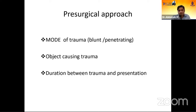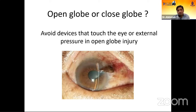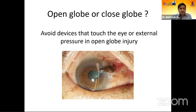The first thing to determine is whether the globe is open or closed. If you are suspecting an open globe injury — either anterior or posterior — avoid touching the eye, avoid applanation tonometry, syringing, or external pressure on the eye. Also avoid ultrasound B-scan or UBM in an open eye.